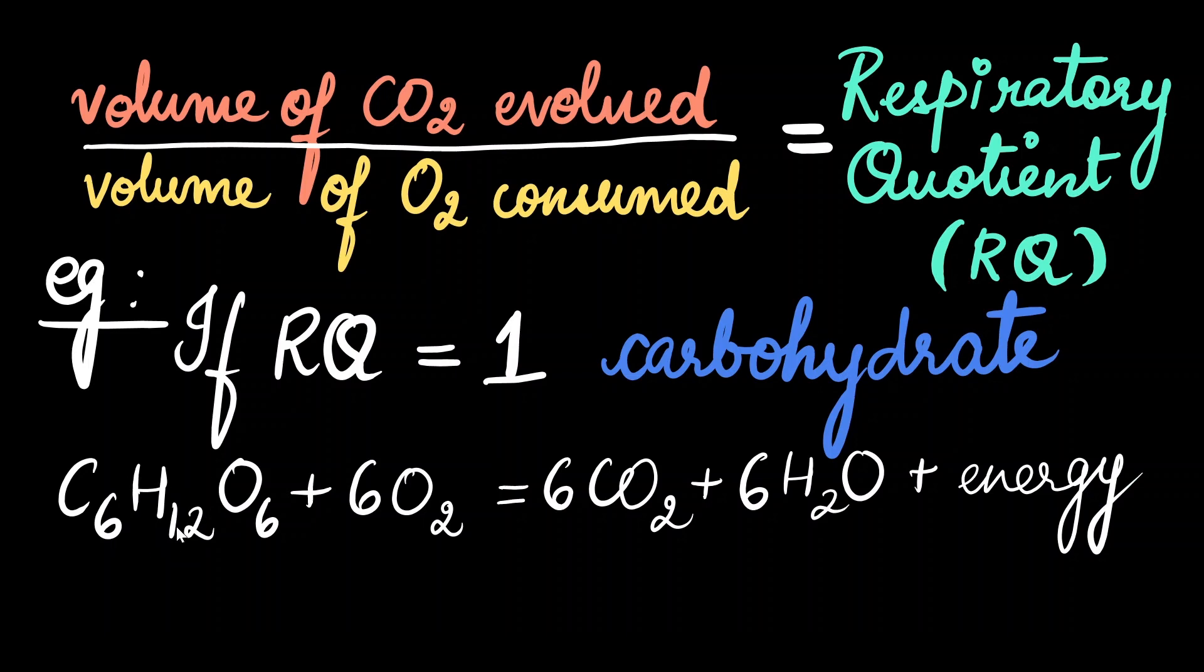So, this is a glucose molecule which is getting metabolized in the presence of oxygen and there is evolution of carbon dioxide, water, and energy. So, here, when we take the volume of carbon dioxide evolved to oxygen consumed, we get the value of 1.